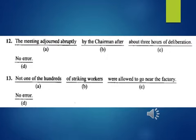Question 12: The meeting adjourned abruptly, A, by the chairman after, B, about three hours of deliberation, C, no error, D. Question 13: Not one of the hundreds, A, of striking workers, B, were allowed to go near the factory, C, no error, D.